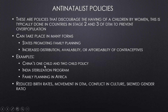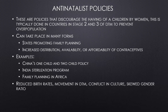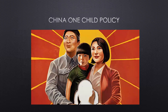Famous examples of anti-natalist policies include China's one-child policy (later two-child policy), India's sterilization program, and family planning efforts across Africa. These policies do result in reduced birth rates and movement through the DTM, but can lead to cultural conflict and skewed gender ratios.